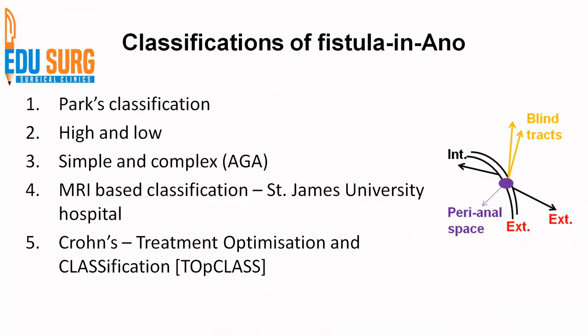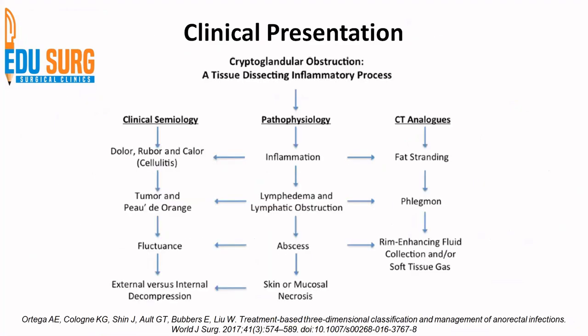We have already seen the fistula anatomy and the various classifications on fistula in ANO. Now we will go towards clinical presentation. As we discussed in the previous video, the cryptoclandular theory is the most commonly accepted theory for formation of anogenital sepsis, collectively known as perianal abscess and fistula in ANO.